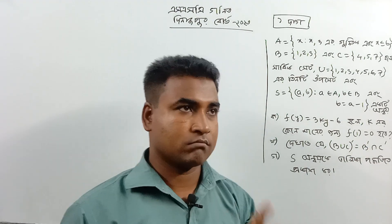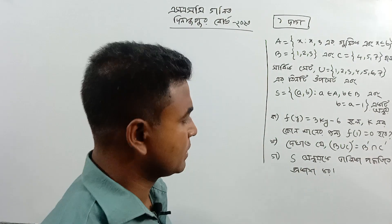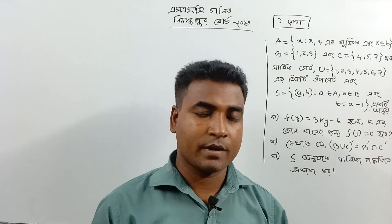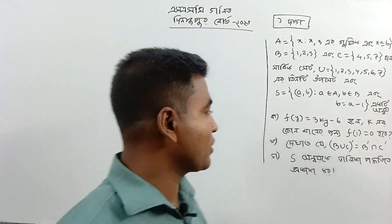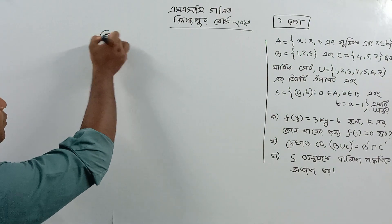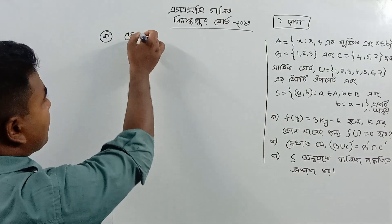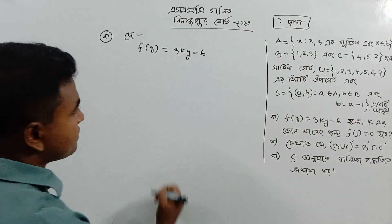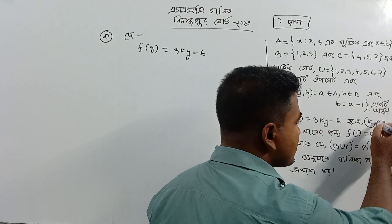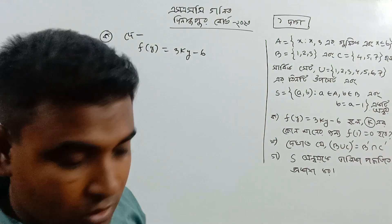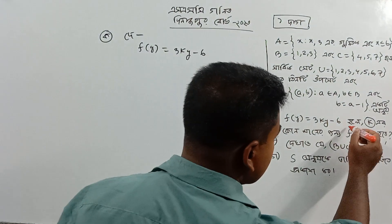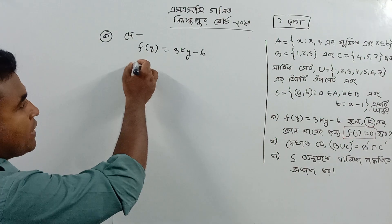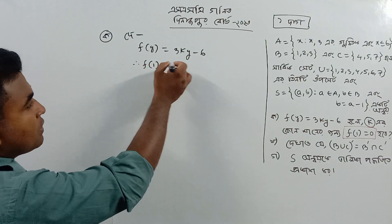Two points are 4. What is the relation? This is very important. We will see that f of y is equal to 3ky minus 6. Here we will say k is equal to what. As we say, f of 1 is equal to 0.